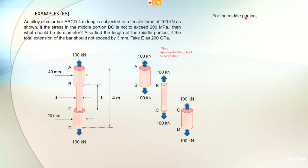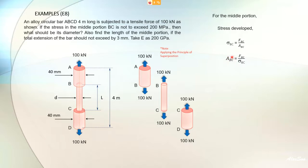For the middle portion BC: the given stress is 200 megapascals. We know stress equals force over area. The force F_BC is 100 kilonewtons (100 × 10³ N) and stress is 200 × 10⁶ Pa. Making area the subject, we can substitute and find the cross-sectional area of section BC.